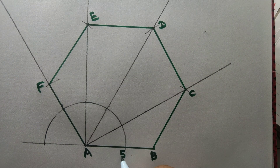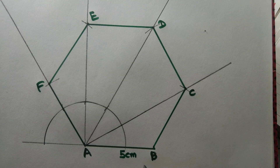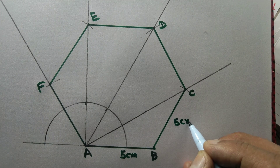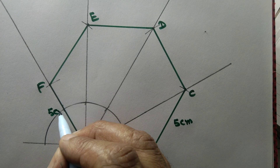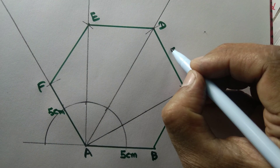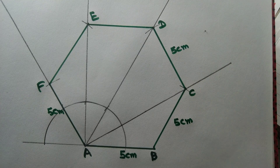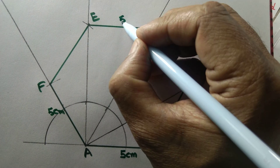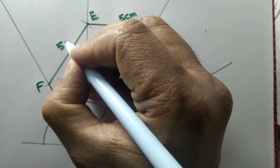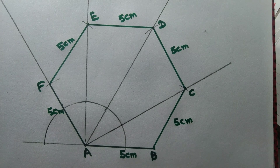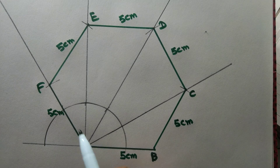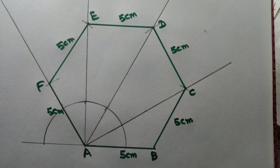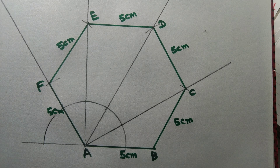Each of the sides measures 5 centimeter. We have circular arcs of radius 5 centimeter, so each side of the regular hexagon measures 5 centimeter. And one of the angles, angle FAB, measures 120 degrees.